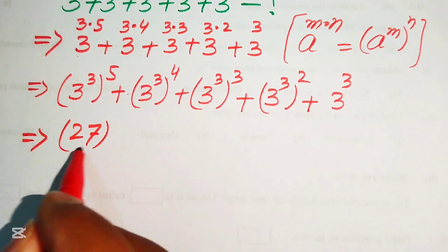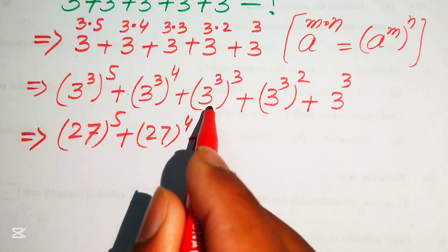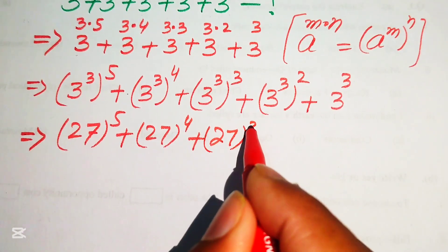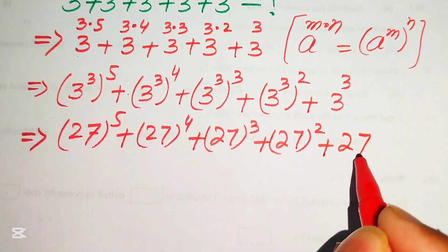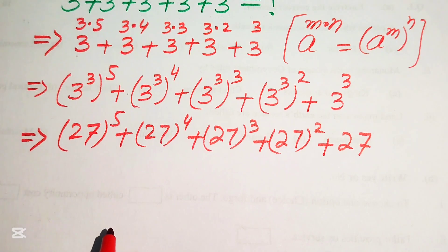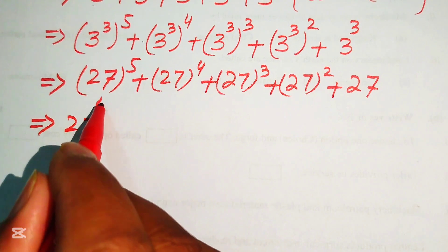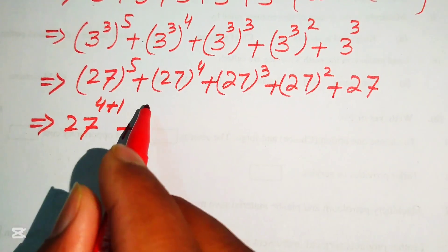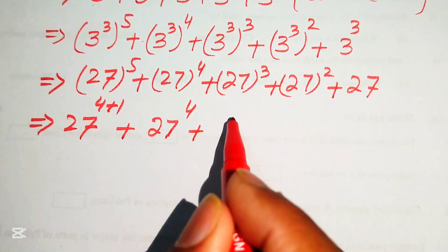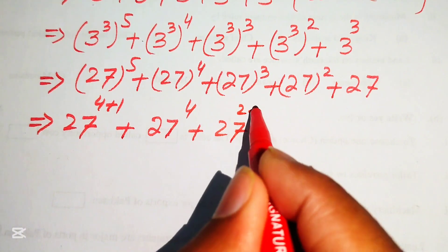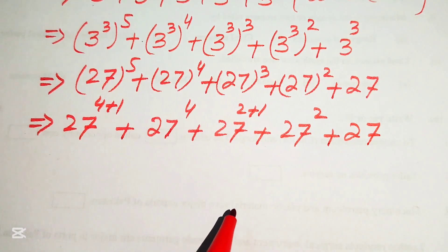We write 3 cubed equals 27, so the expression becomes 27 to the power of 5 plus 27 to the power of 4 plus 27 to the power of 3 plus 27 squared plus 27. Now we break the exponent 5, writing it as 27 to the power of 4 plus 1, and we write 27 to the power of 3 as 27 to the power of 2 plus 1, giving us 27 to the power of 4 plus 1, plus 27 to the power of 2 plus 1, plus 27 squared, plus 27.